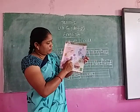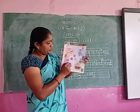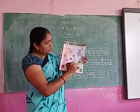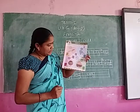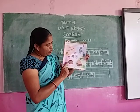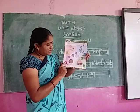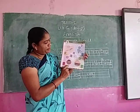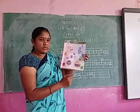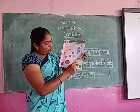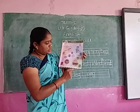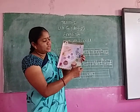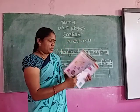Then after, vowel I letter words: B-I-T bit, P-I-T pit, K-I-T kit. Next, vowel O letter words: H-O-T hot, C-O-T cot, P-O-T pot. Next, vowel U letter words: H-U-T hut, C-U-T cut, N-U-T nut.